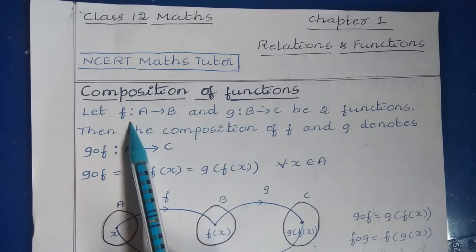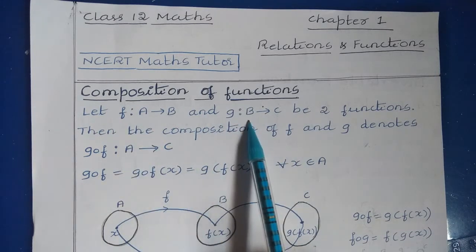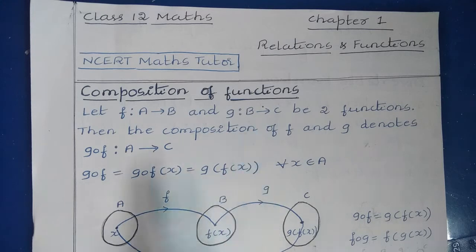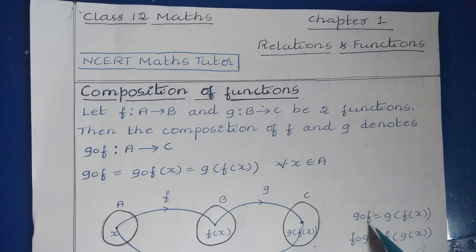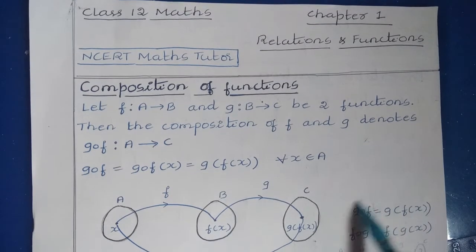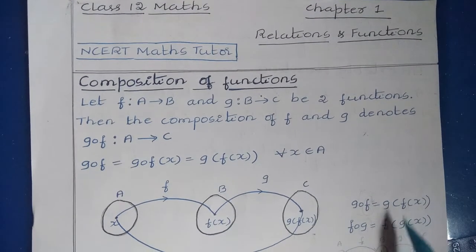We write gof as gof(x) = g(f(x)) for all x belonging to A. The domain of the composition gof is the domain of f, and the co-domain of gof is the co-domain of g. Similarly, we can have fog, written as f(g(x)). So these two types of compositions are possible.